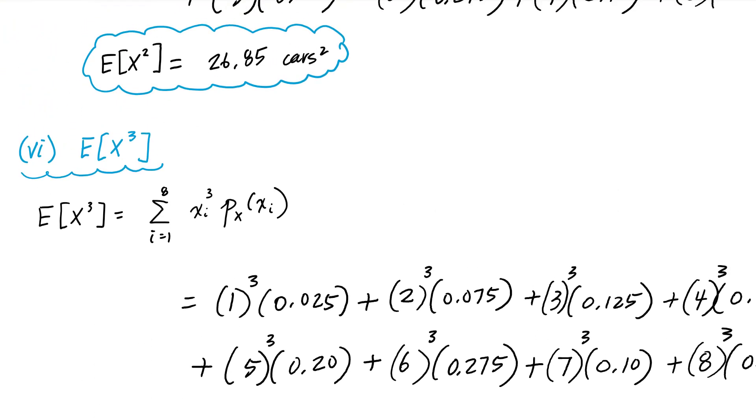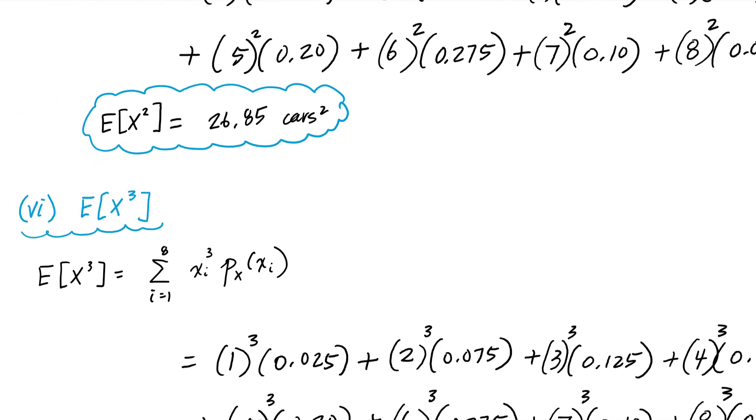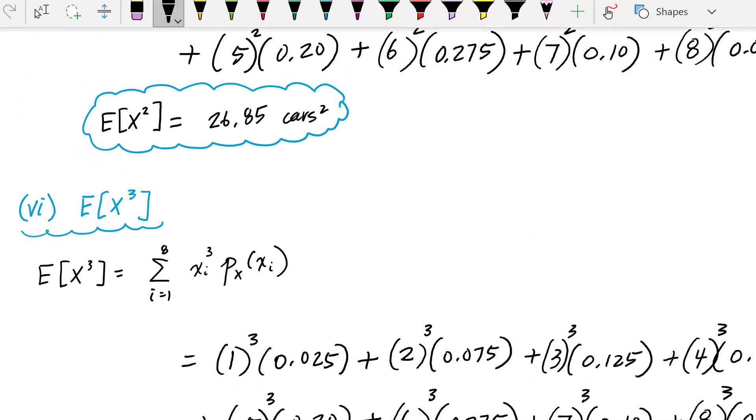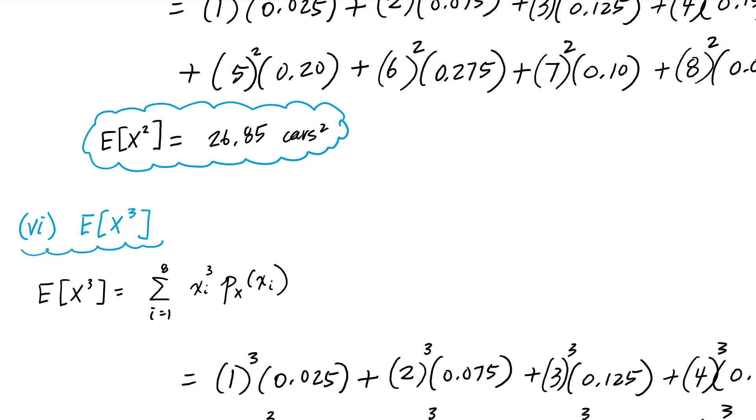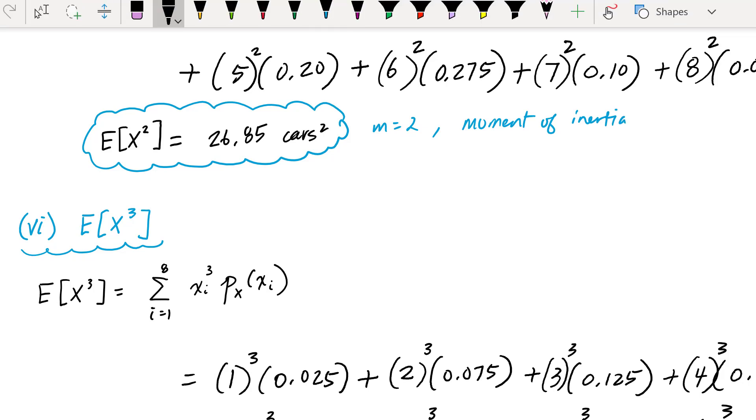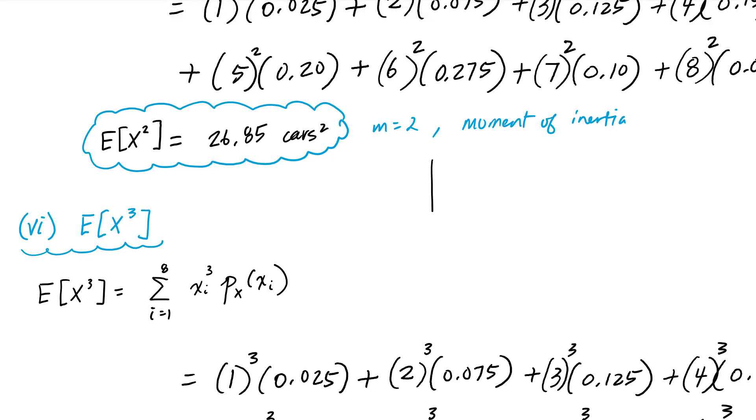And the way I look at this number is, with these numbers here in general, these expected values, I try to think of the analogy with moments of inertia. And what it really does describe here is the shape of that PDF. In particular, this m equals 2 is analogous to the moment of inertia of a cross section, or its resistance to rotating around x equals 0.